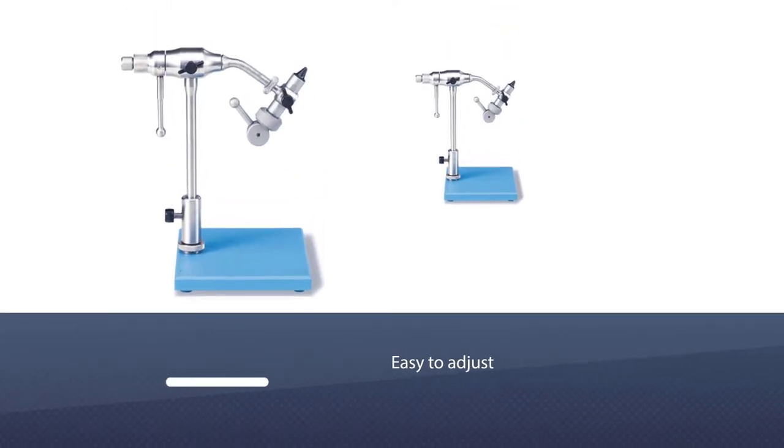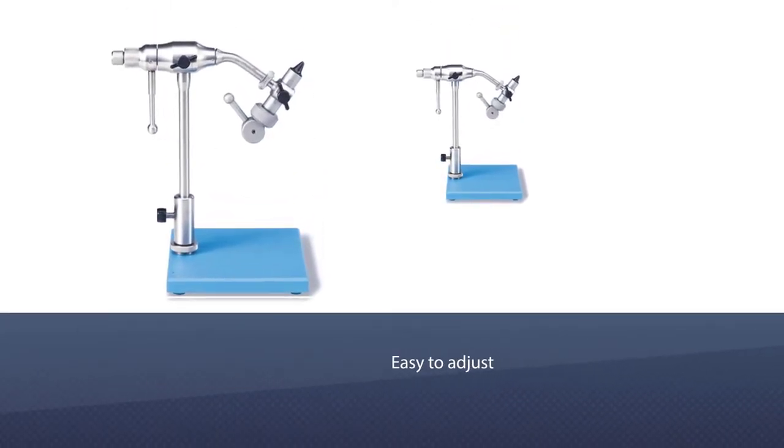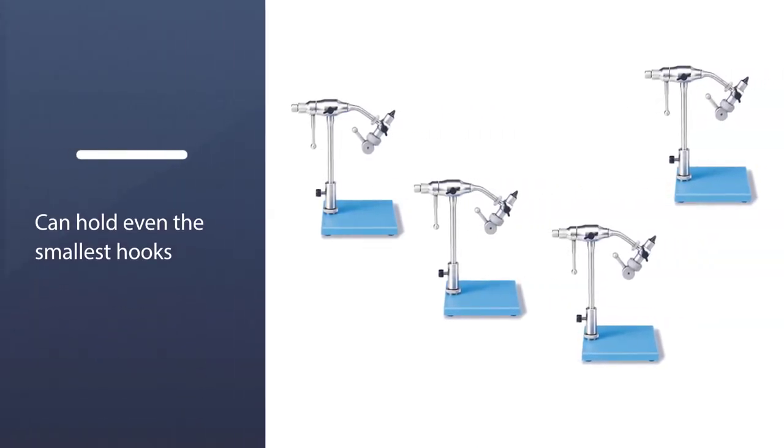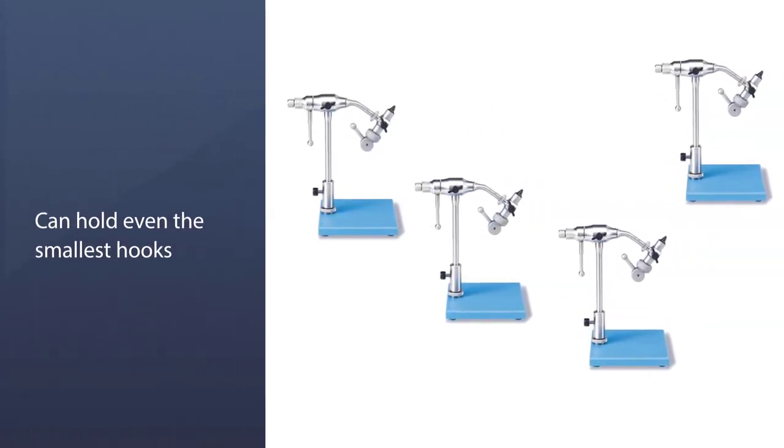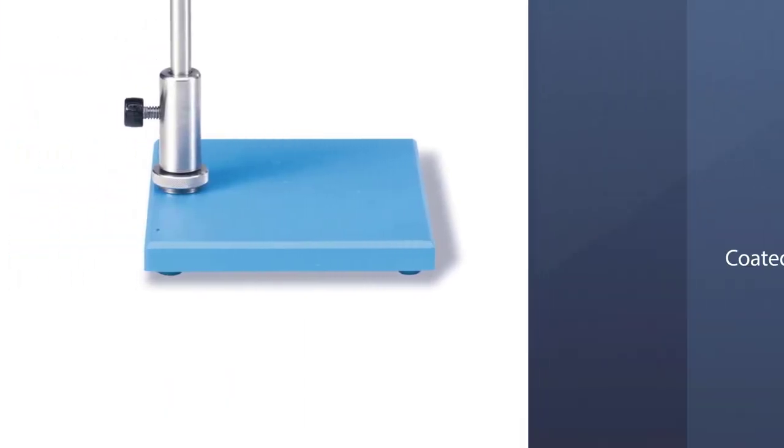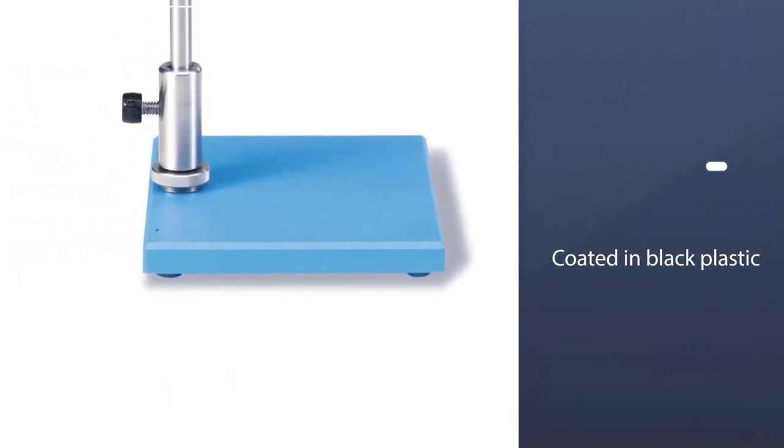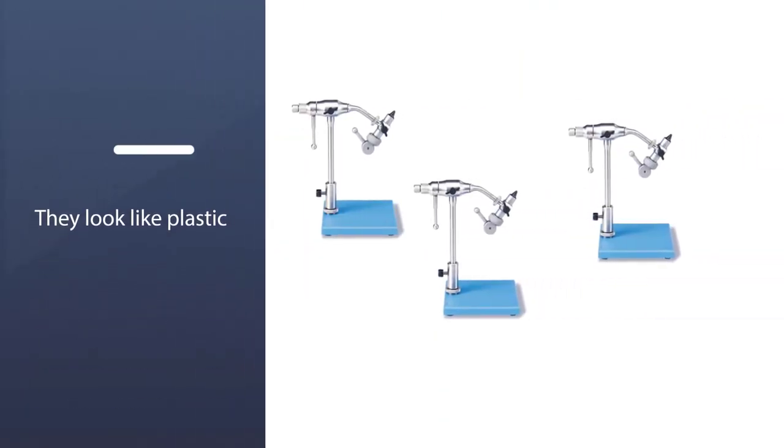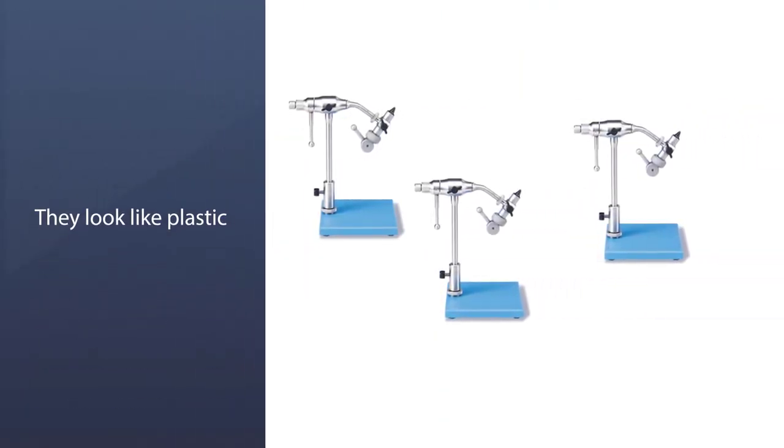The jaw on the Atlas is easy to adjust, and can hold even the smallest hooks. If you're like me, you'll have problems with your own grip on number 28 and smaller hooks before the vise will. One thing about those adjustment knobs, they look like plastic. That's because they're coated in black plastic to make them feel easier on the hands.